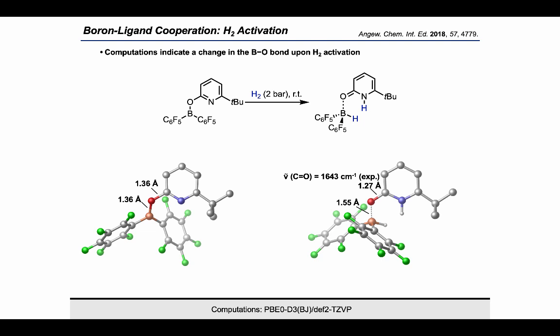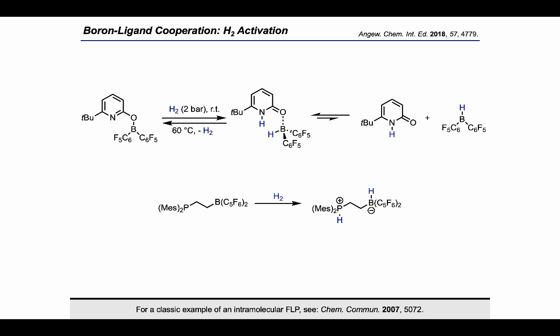Thus, there is evidence that upon hydrogen activation, the pyridonate substituent turns into a datively bound pyridone ligand. This is reminiscent of the change of an X-type ligand to an L-type ligand upon bond activation by metal ligand cooperation. But what are the consequences for the reactivity of the system?